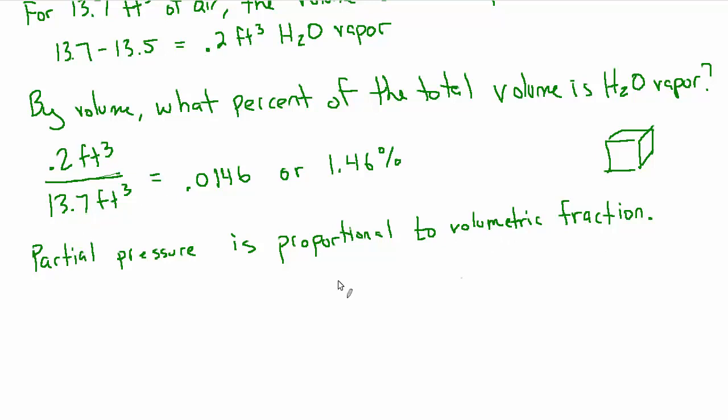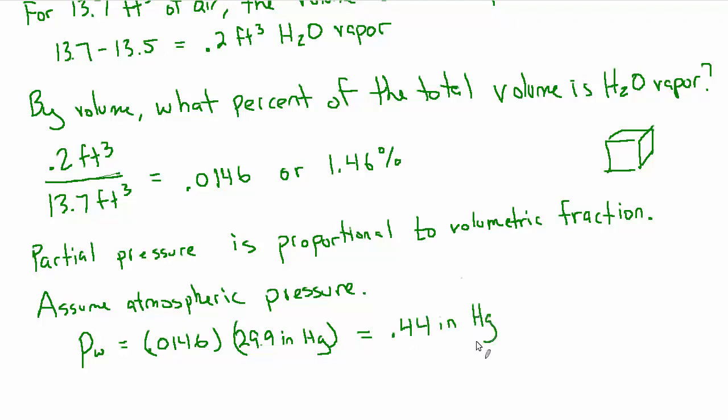So in this case, if we assume that the total pressure is atmospheric pressure, all we need to do to find the partial pressure for water vapor is multiply by the volumetric fraction. So let's assume atmospheric pressure. We should be able to say that the partial pressure of water vapor is equal to 0.0146 times 29.9 inches of mercury. And if we multiply that out, we get 0.44 inches of mercury, which again is close enough to answer C.